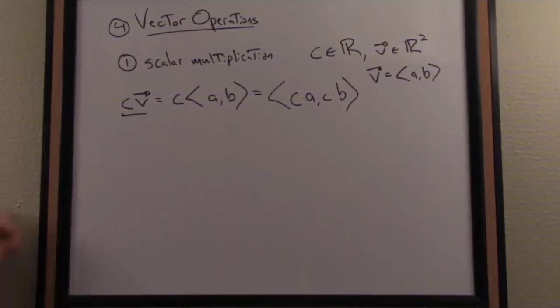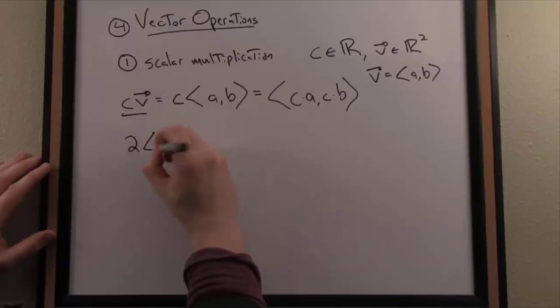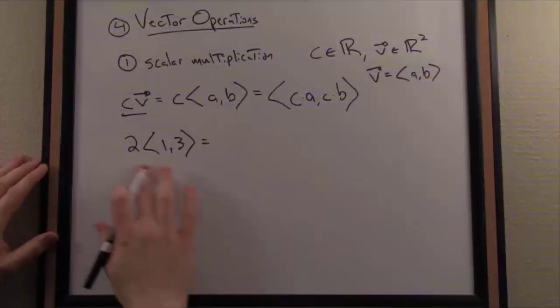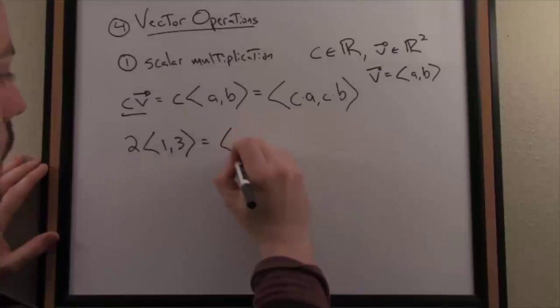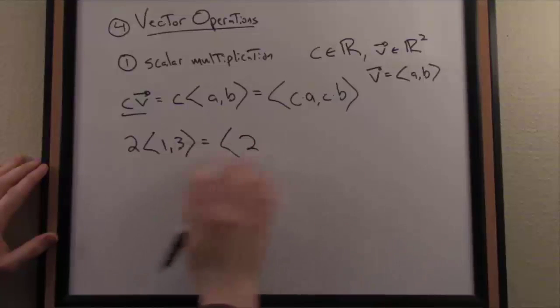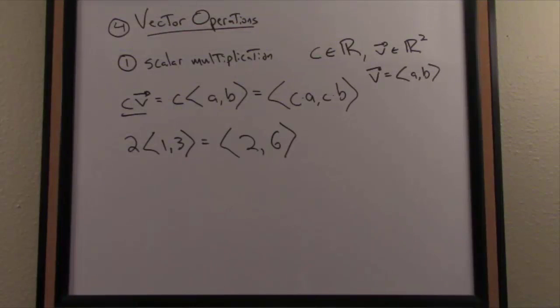Let's do that with a simple example then. So for instance, if I have the scalar, let's say, 2 times the vector 1 comma 3. Once again, I distribute the 2 across the components of the vector. Pretty simple arithmetic here, right? So I just go 2 times 1 is 2, 2 times 3 is 6. There is my new vector known as the resultant vector of that scalar multiplication.